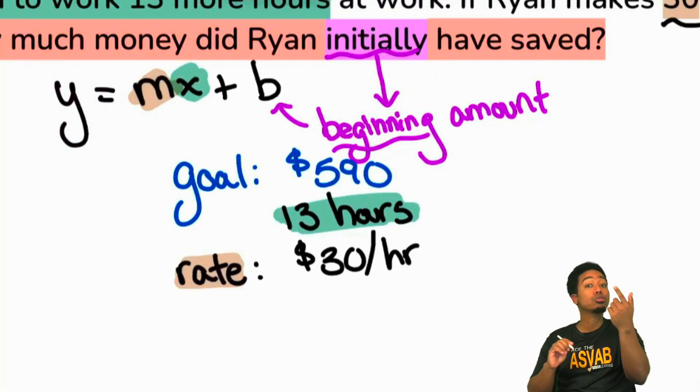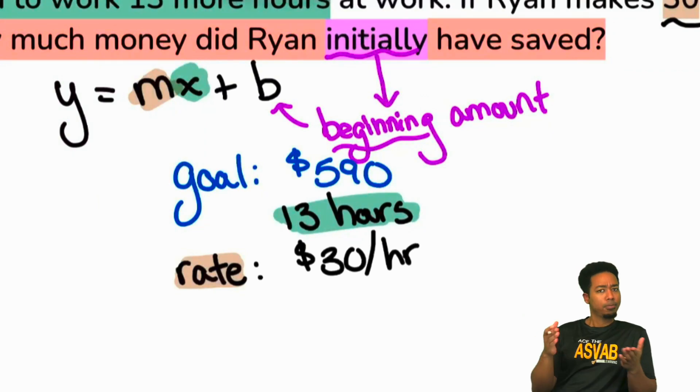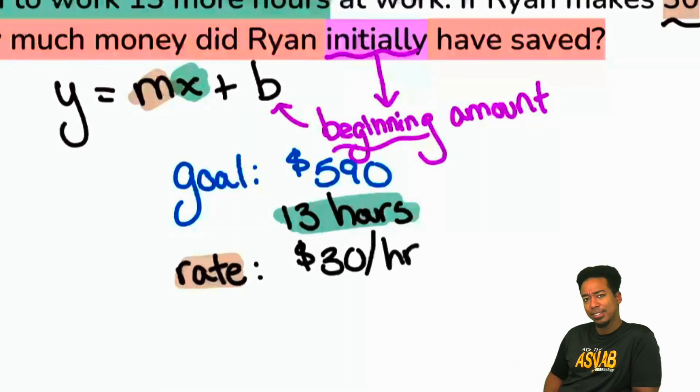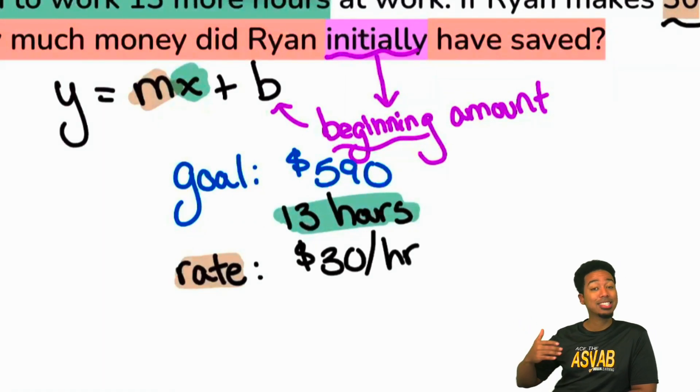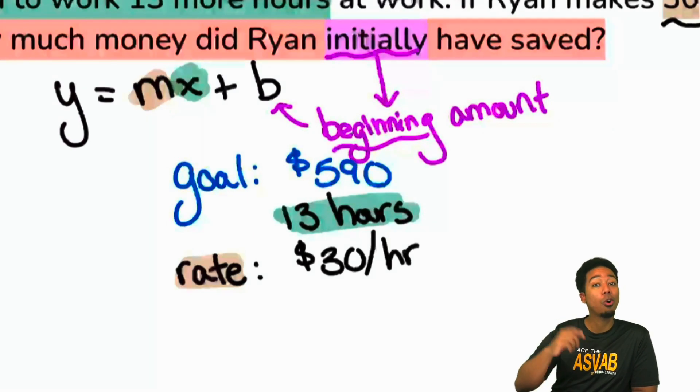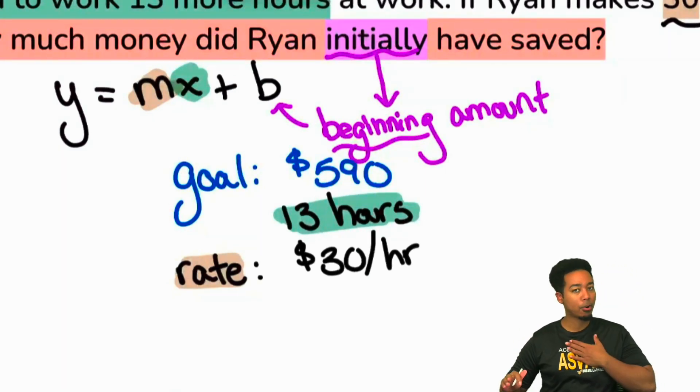590. Now let's understand why. I don't like playing the game of 'yep, that's it, let's move on.' Why is that 590? What does 590 describe? It's y, sure, but in the situation, in the word problem, what does 590 represent? Right, that's where Ryan wants to be. That's the ending amount that he's trying to achieve, that's his goal. And so, bam, that's how you know. Remember, y is the ending amount.